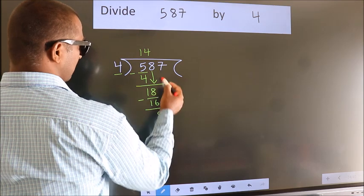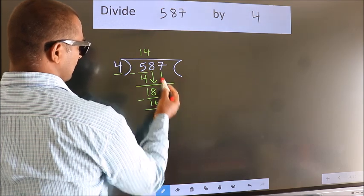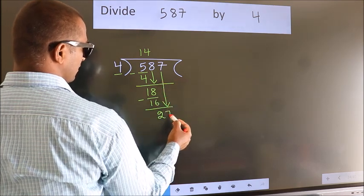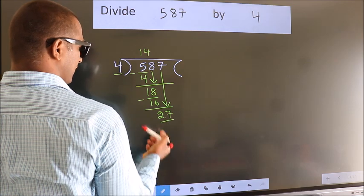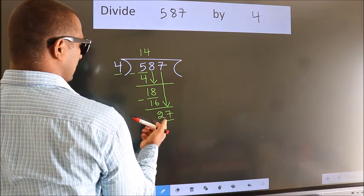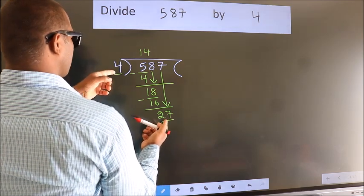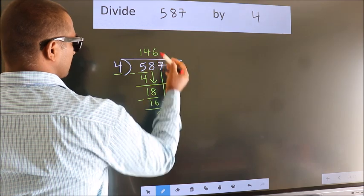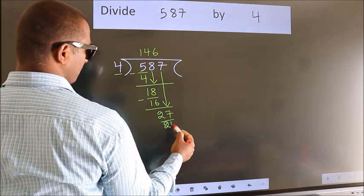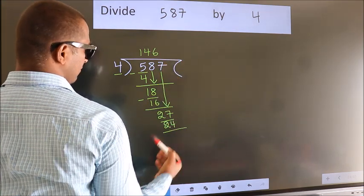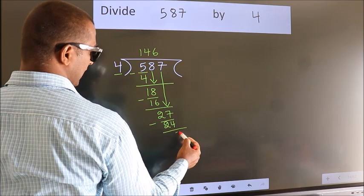After this, bring down the beside number. So 7 down. So 27. A number close to 27 in 4 table is 4, 6, 24. Now we subtract. We get 3.